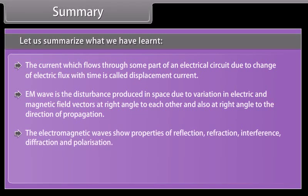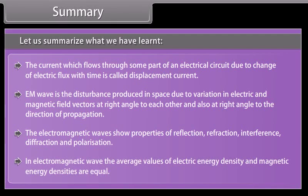The electromagnetic waves show properties of reflection, refraction, interference, diffraction and polarization. In electromagnetic wave, the average values of electric energy density and magnetic energy densities are equal.